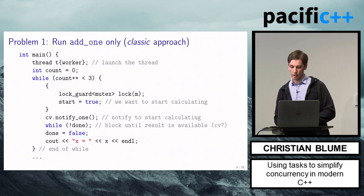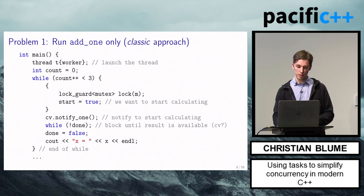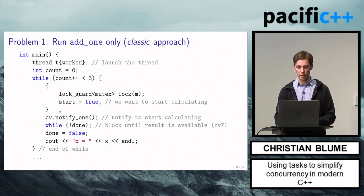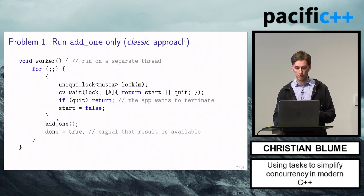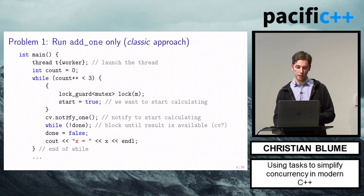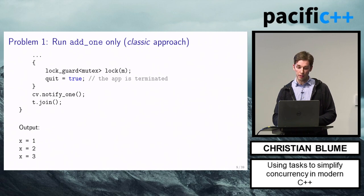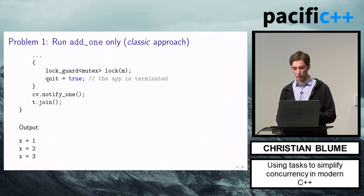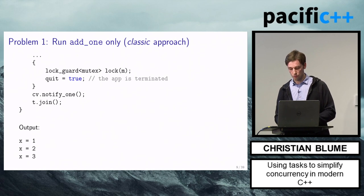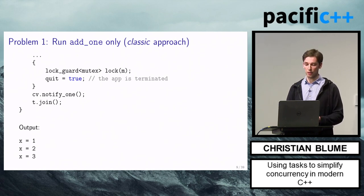In the main function, you launch the thread, then do this three times: lock the mutex, set 'start' to true, notify the condition variable, then wait until the result is available, and output the result. After the while loop, to terminate the app: lock again, set 'quit' to true, notify, and join the thread. The output is simply 1, 2, 3. In my opinion, this code is a bit error-prone and ugly, so let's see how we can improve on this.